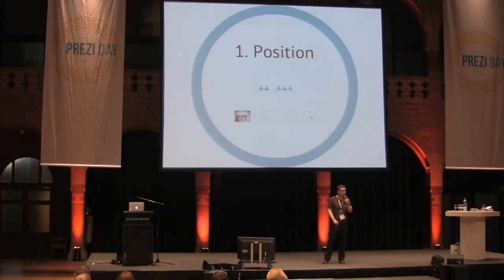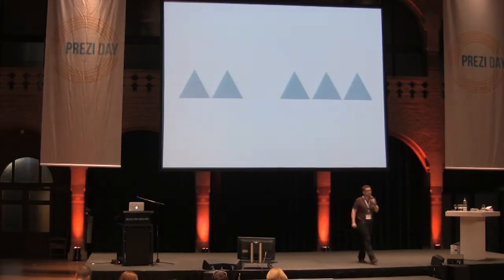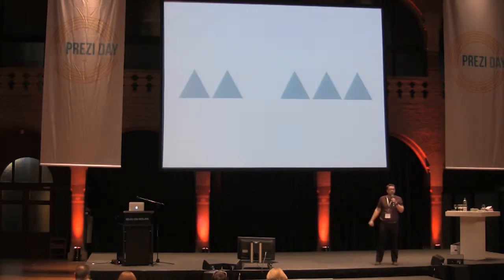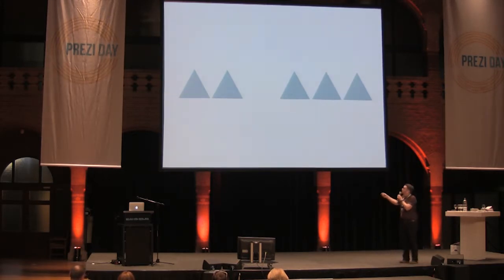The first thing I think is important for your Prezi overview or your Prezi in general is position. I'm going to ask you a question: what do you see? Do you see five triangles? Do you see one missing in between? Do you see a group of two and a group of three?